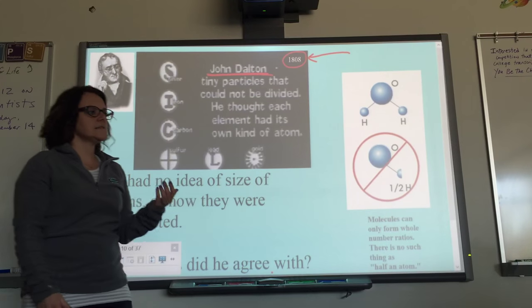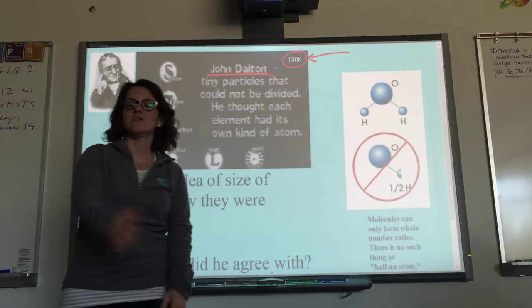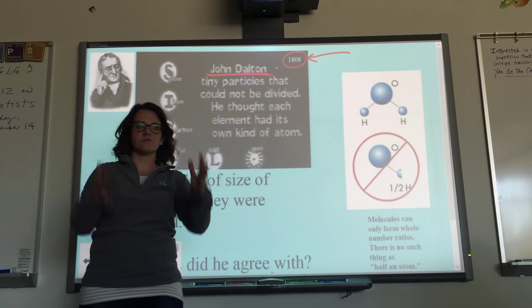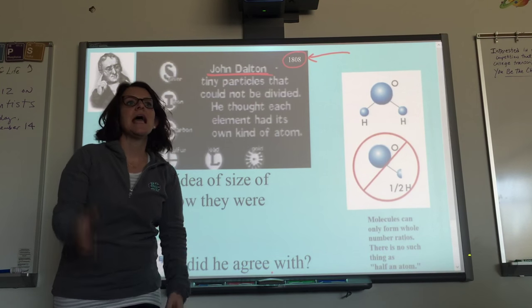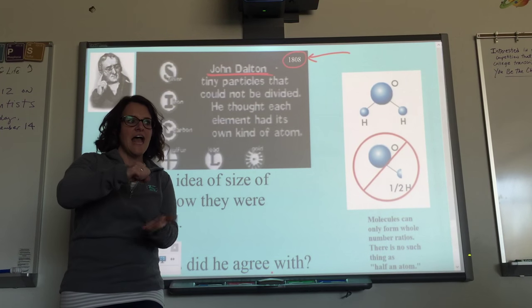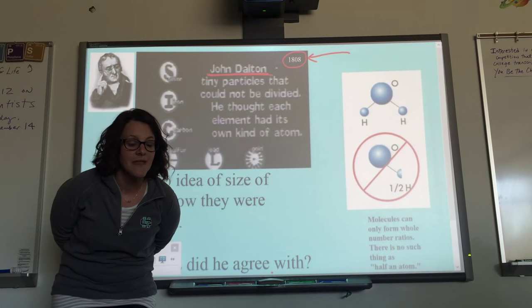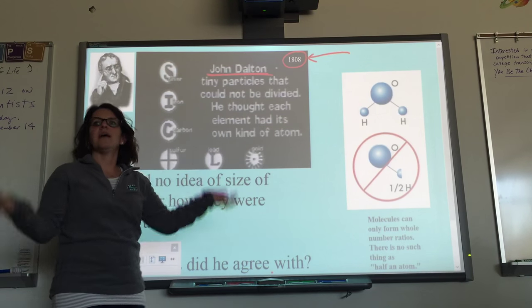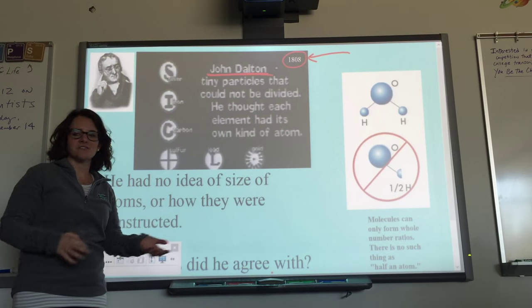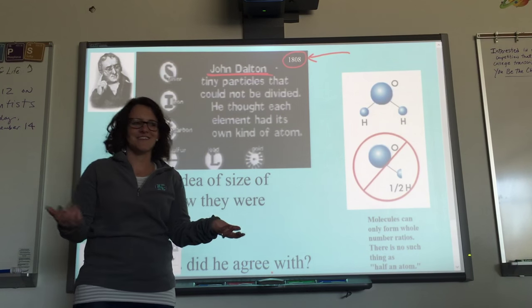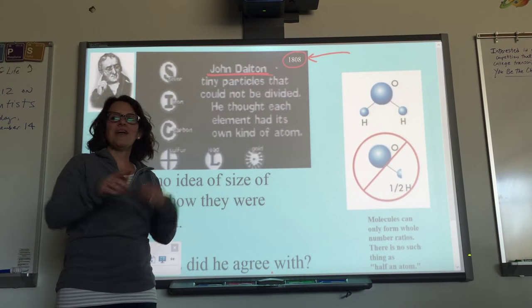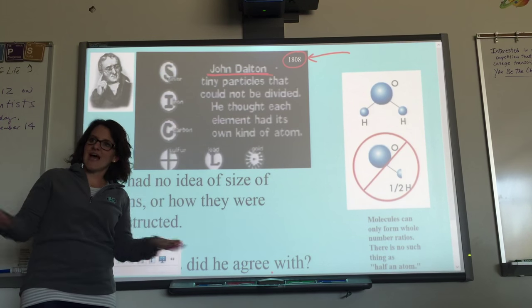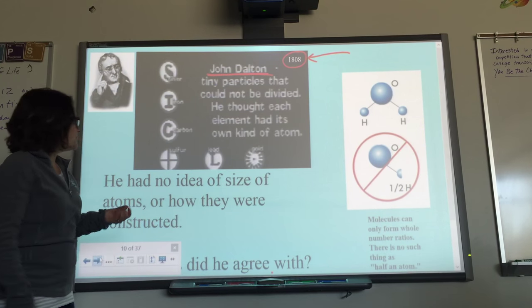Robert Boyle discovered oxygen. He took a bell jar — a glass dome jar — and put a mouse underneath it, then removed all the air. The mouse died. He repeated the experiment and this time added oxygen. The mouse was vivacious and running around. He discovered that oxygen will bring life and is its own element.